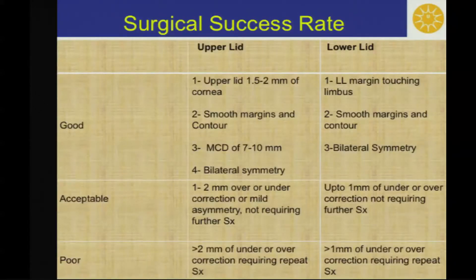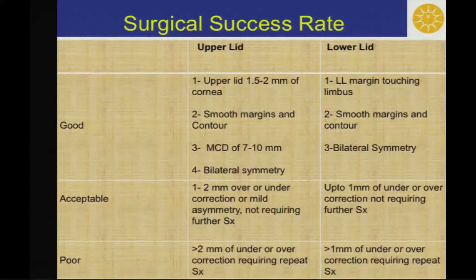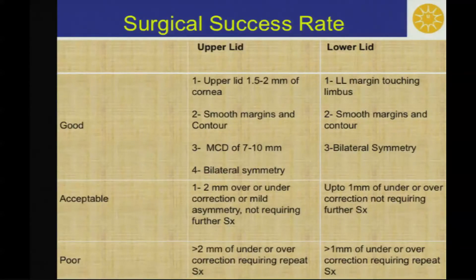Surgical success was rated as good when there was bilateral symmetry, smooth margins in contour, and for the upper lid, when the upper lid is covering 1.5 to 2 mm of cornea and lower lid margin touching the limbus. Acceptable when there is mild asymmetry not requiring surgery, and poor when there is asymmetry or under- or over-correction requiring repeat surgery.